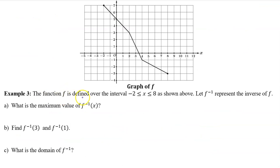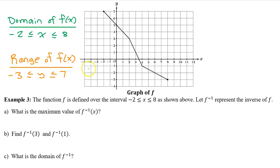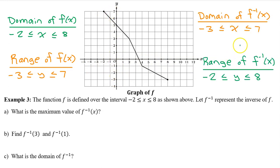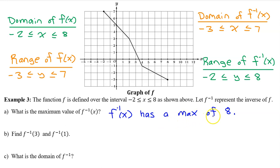Example 3: the function f is defined over the interval from negative 2 to 8. Let f inverse represent the inverse of f. Part A: what is the maximum value of f inverse? We see that the domain of f goes from negative 2 to 8, and the range of f goes from negative 3 to 7. Therefore, the domain of f inverse will go from negative 3 to 7, and the range of f inverse will go from negative 2 to 8 — they switch. So f inverse has a maximum value of 8.